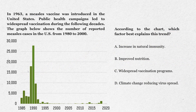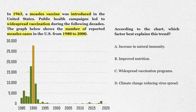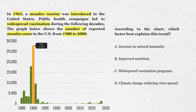Next, let's take a look at this graph about measles cases in the United States. The background tells us that in 1963, a measles vaccine was introduced, and public health campaigns led to widespread vaccination. The chart shows reported measles cases from 1980 to 2000. In the mid-1980s there were spikes — tens of thousands of cases. But after the late 1980s, the bars dropped dramatically, and by the mid-1990s onward, cases are close to zero. The overall trend is a sharp decline in measles cases.